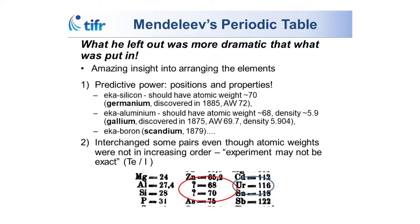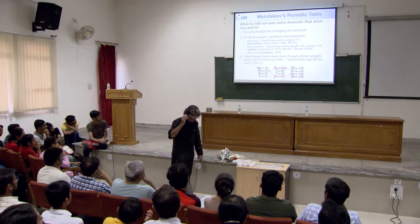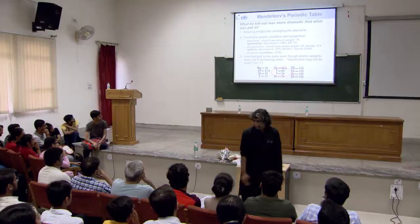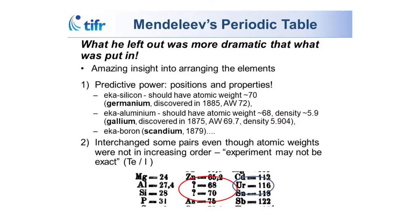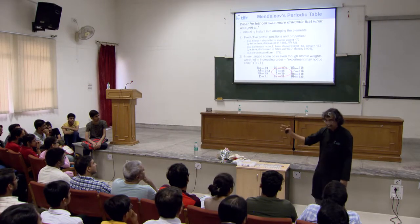Mendeleev's genius is not what he put in the periodic table but what he left out — the places he put question marks, and the power of insight in predicting properties. He says below aluminum will be an element; Eka-silicon should have atomic weight 70 — Germanium was discovered with 72. Eka-aluminum (Gallium) he says will have atomic weight 68, density 5.9 — when found, it was 69.7 and 5.904. He had faith in what he was doing: for tellurium and iodine, he put iodine after tellurium even though it wasn't in order of atomic weights, saying atomic weight measurements were wrong — and eventually they re-measured and found Mendeleev was right.